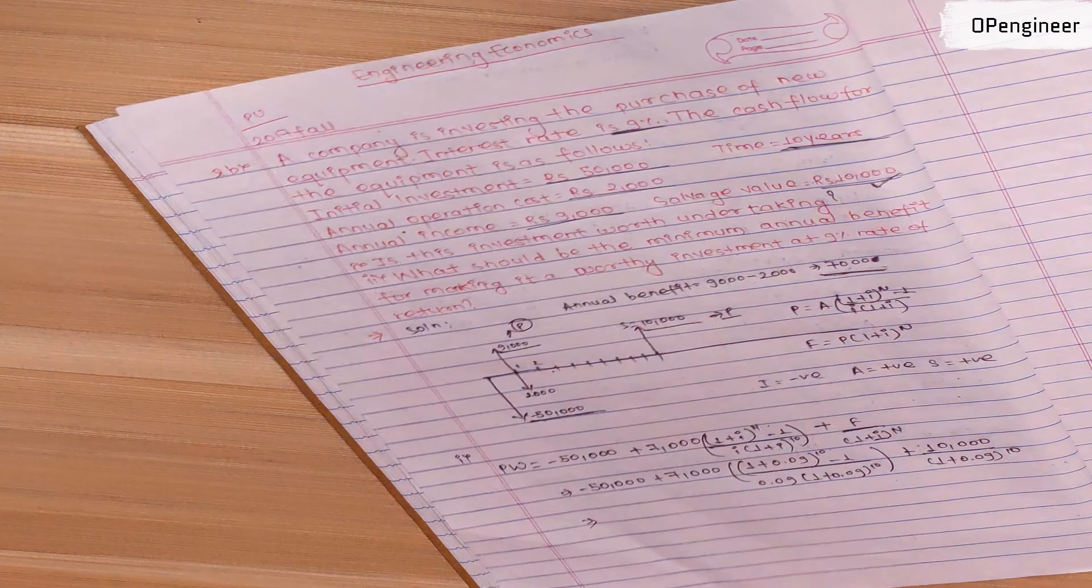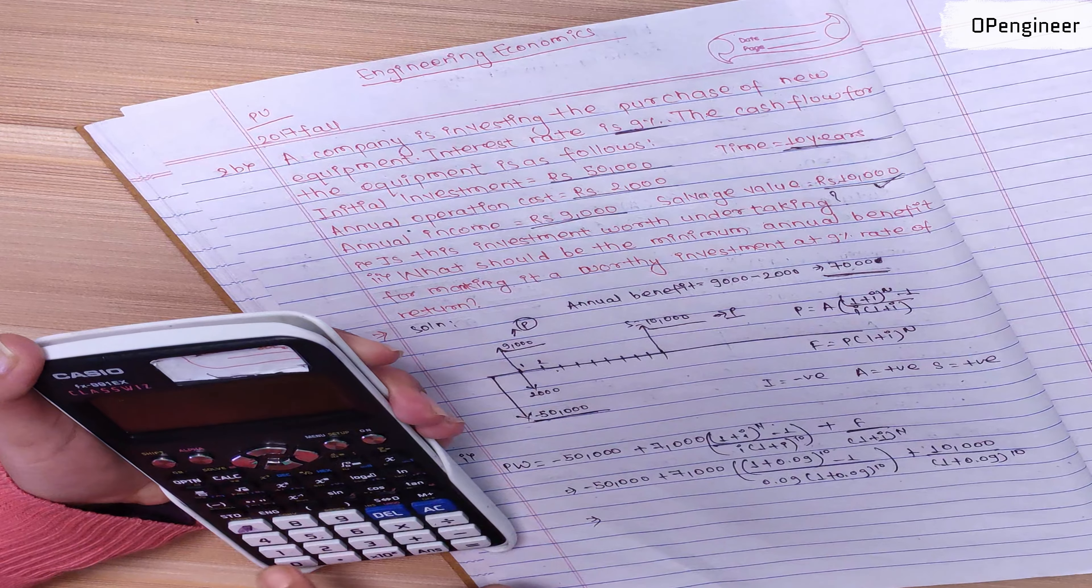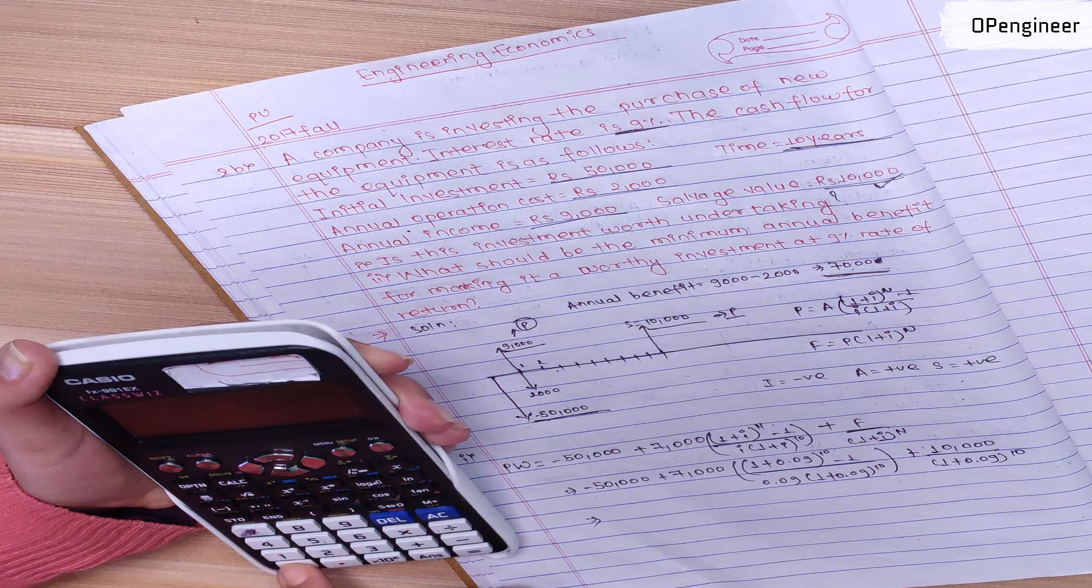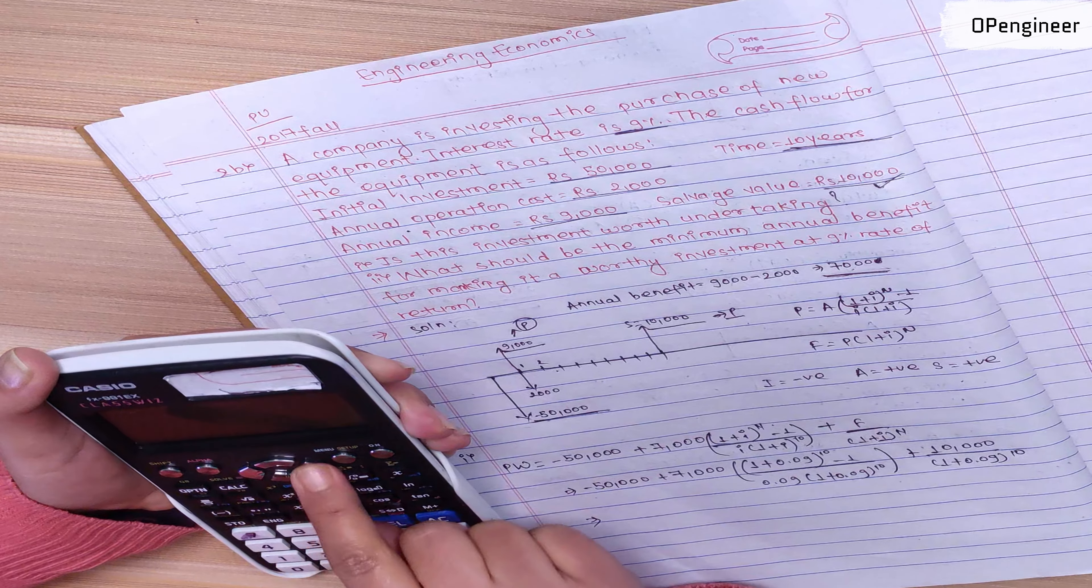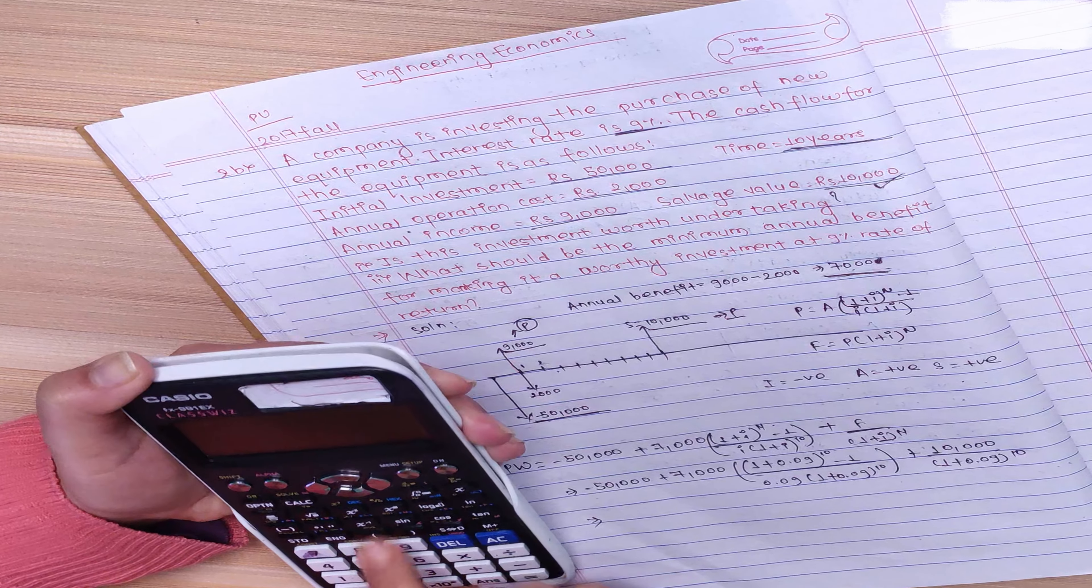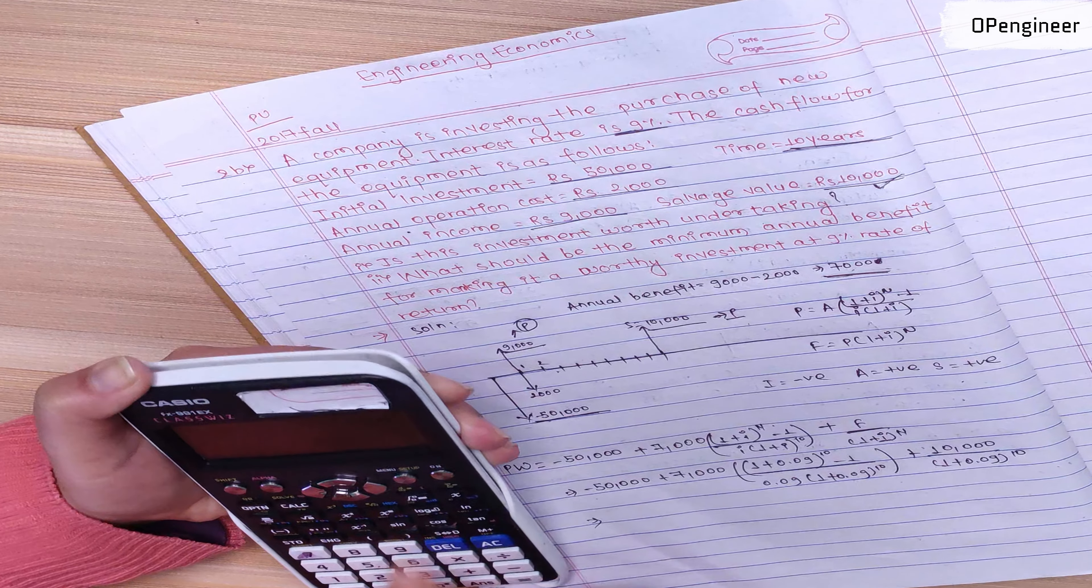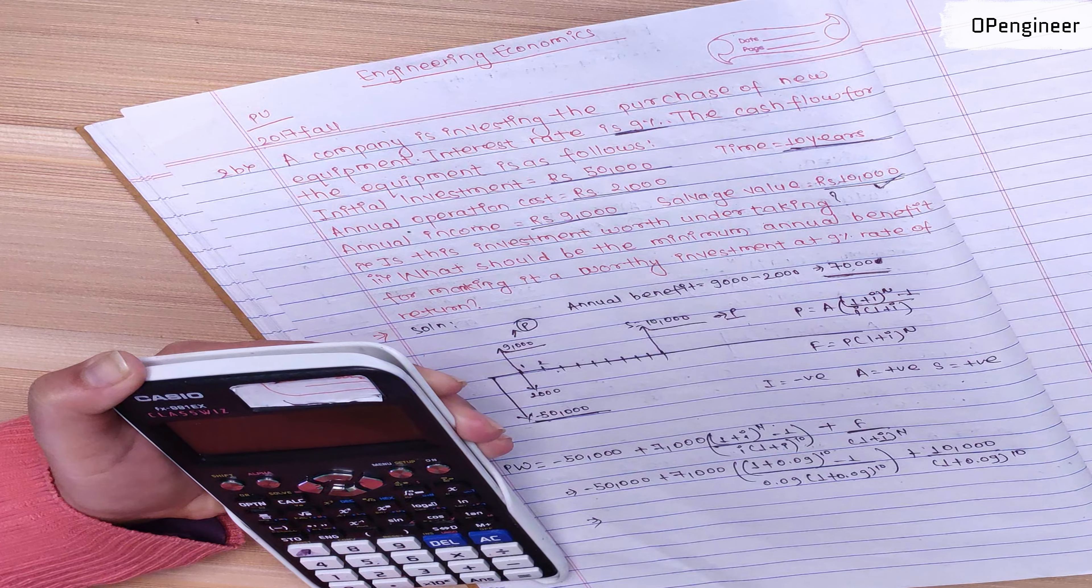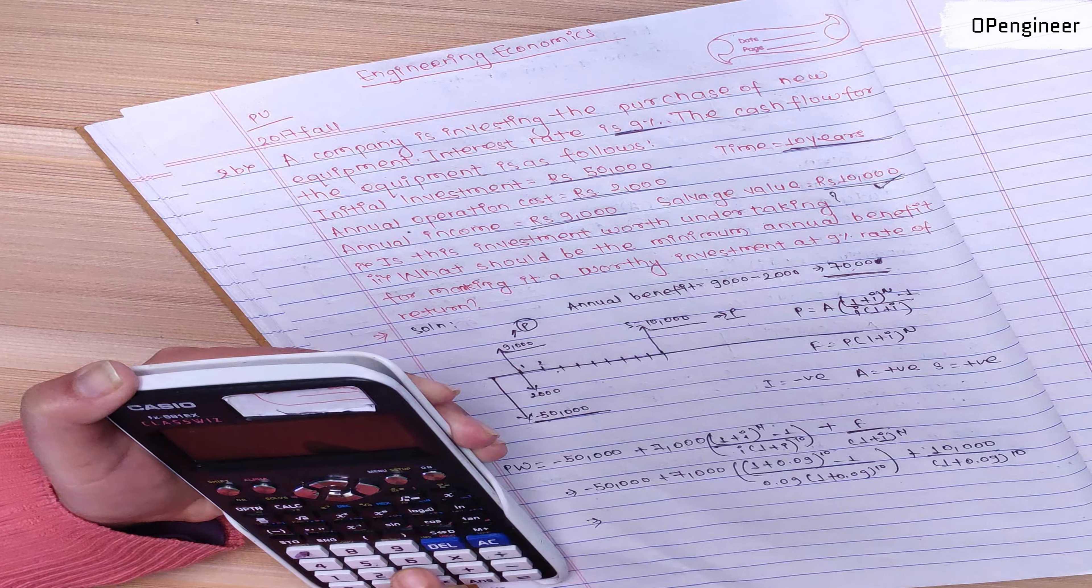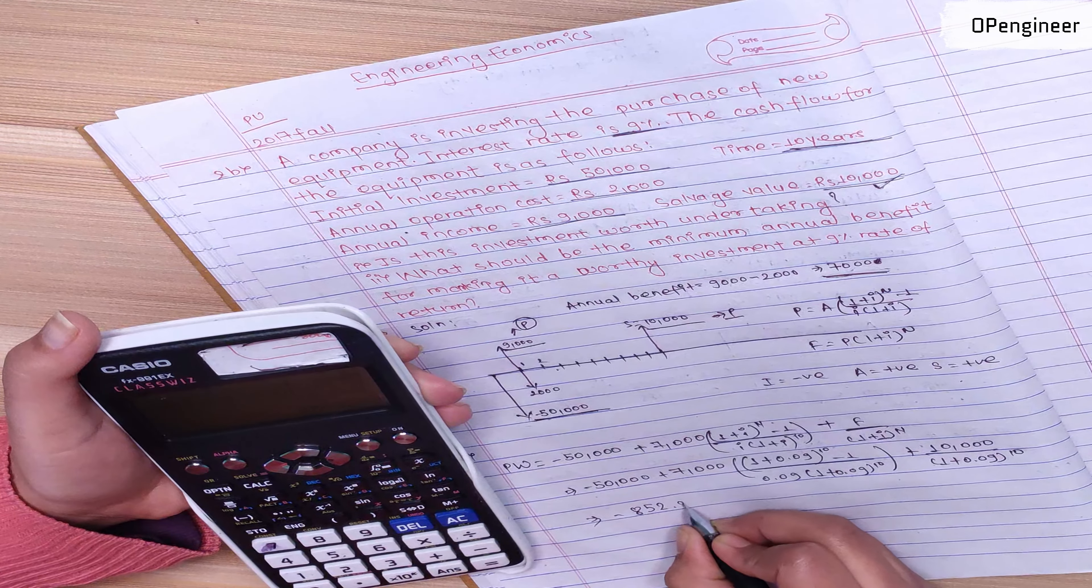Calculating: minus 50,000 plus 7,000 times (1 plus 0.09) to power 10 minus 1, divided by 0.09 times (1 plus 0.09) to power 10, plus 10,000 divided by (1 plus 0.09) to power 10. This equals minus 852.28.